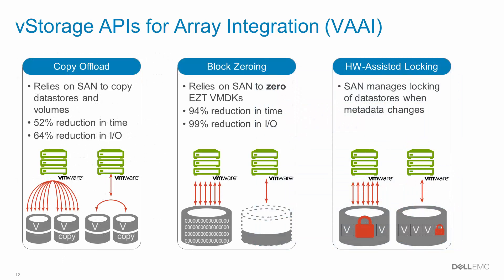When a storage vMotion or VM deployment from a template is requested, the copy offload primitive allows the storage array to perform the bulk copy operations. Without the primitive, the vSphere host manages the copy operation on a per-IO basis on the fabric. With the primitive enabled, significant gains in efficiency are made and the operations generally complete more quickly.